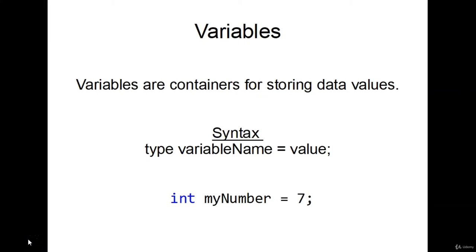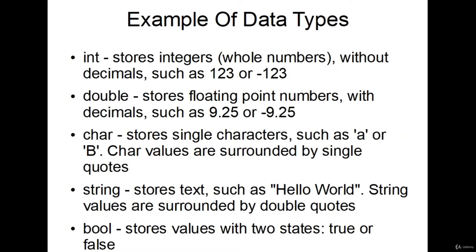In this video we're going to cover variables. Variables are just containers to store data values. The syntax for declaring a variable: first you say what type it is — float, double, int, or string. Then you give your variable a name, followed by a value. For example: we have an int, we called it 'myNumber,' and it equals 7. So whenever I call myNumber and print it out, I'm going to get 7.